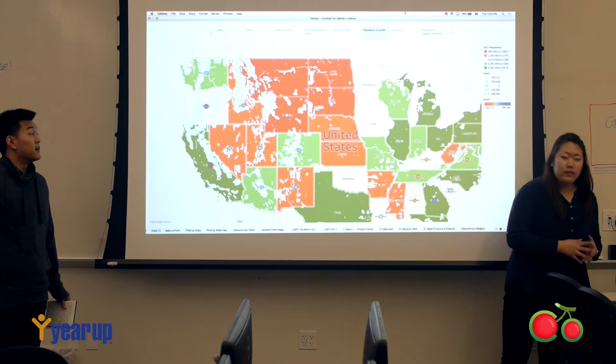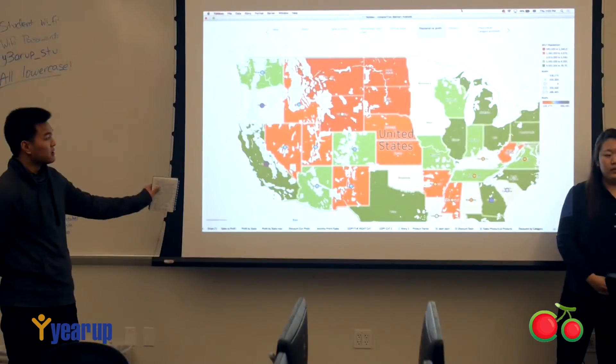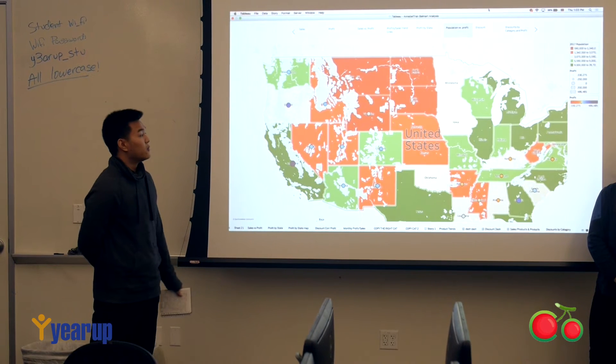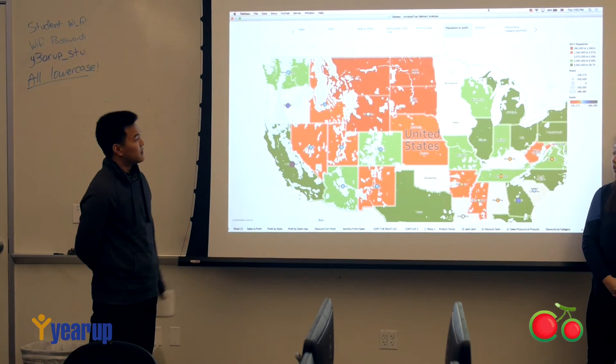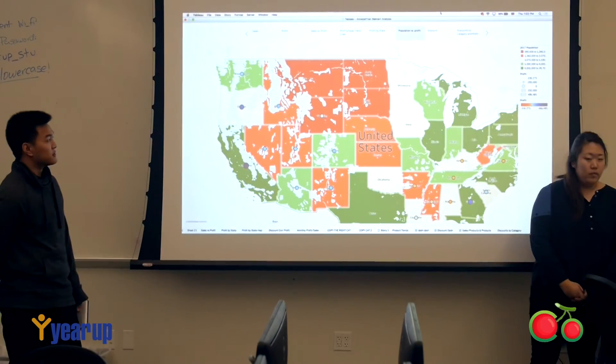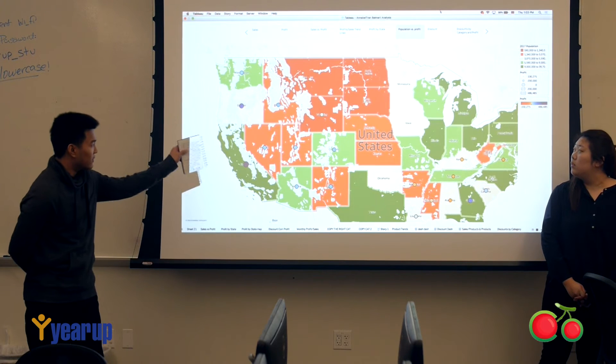A strategy we developed from this data would be redistribution — using the areas that are more populated, where Walmart seems to be doing well, while also decreasing awareness in areas that weren't doing as well, such as Montana and the Midwest region.